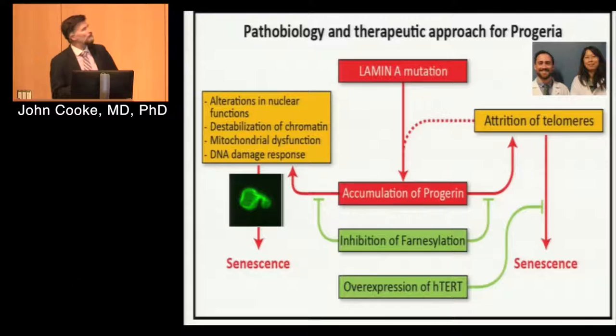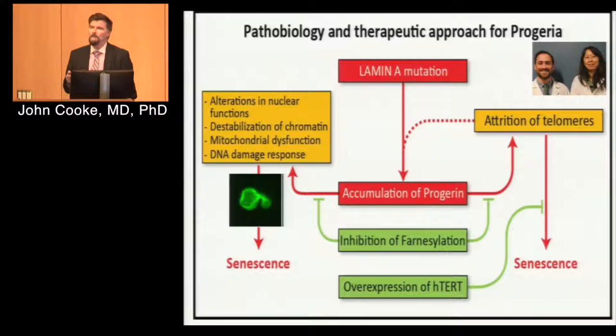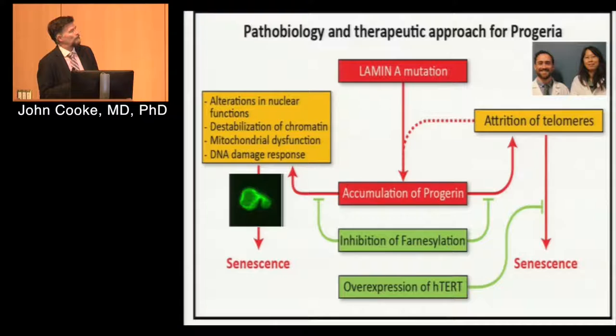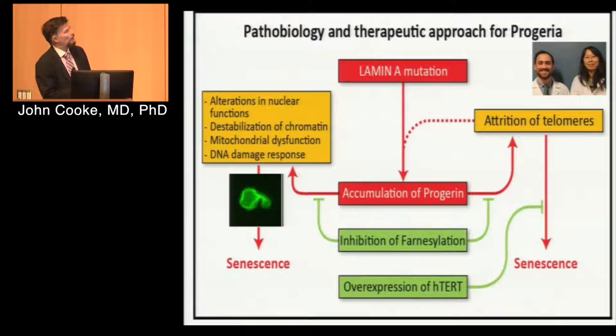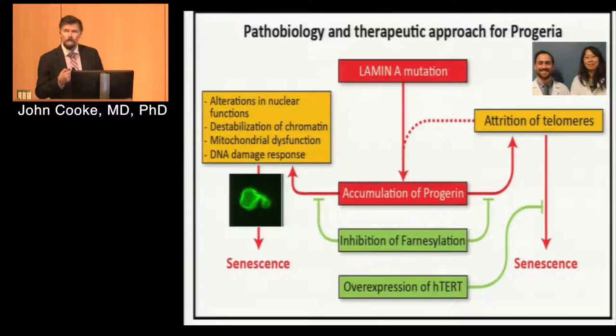The disease is due to a mutation in a nuclear lamin protein — this is a laminopathy. Lamin A is mutated at a splice site for farnesylation. As a result, the abnormal lamin, called progerin, becomes farnesylated, which is normal. Normally, Lamin A becomes farnesylated and migrates to the nuclear envelope, where the farnesyl group is cleaved. But in these kids with the mutation, the farnesyl group can't be cleaved. Progerin gets stuck to the nuclear envelope, causing lobulated nuclei and general distortion of nuclear architecture, with changes in gene expression associated with aging, including telomere erosion.